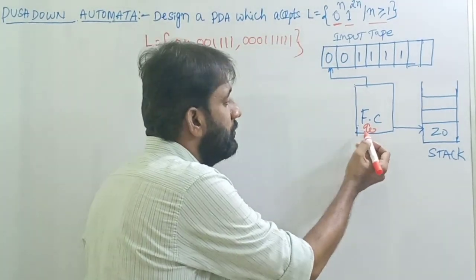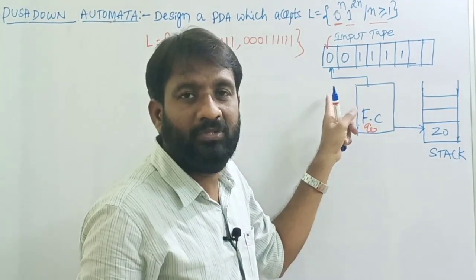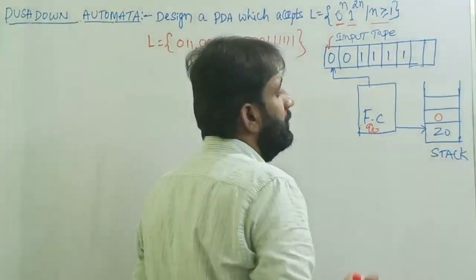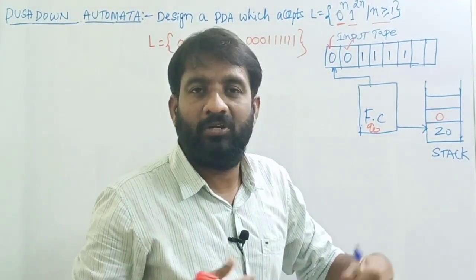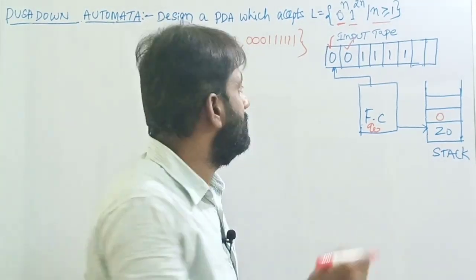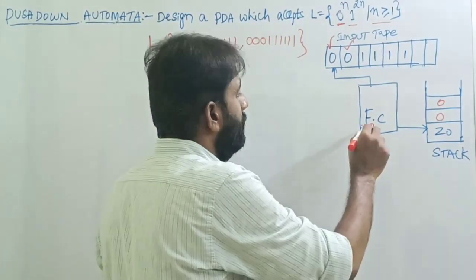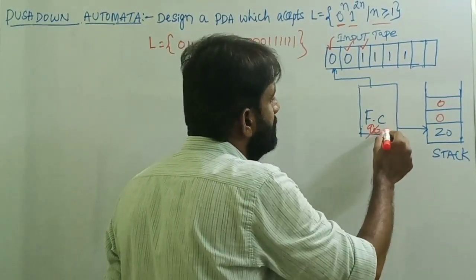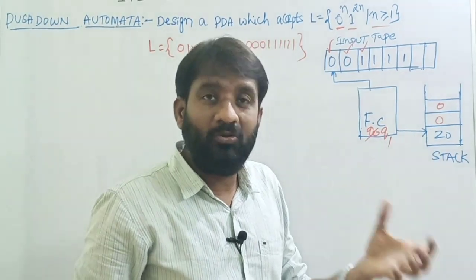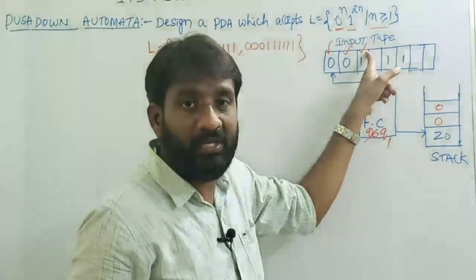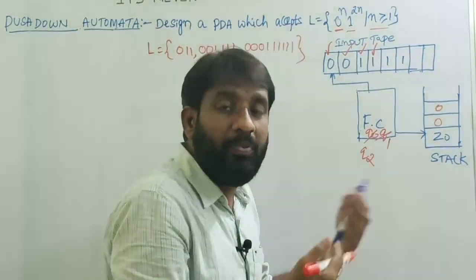Let me explain through a configuration. Initial state is q0. The first input symbol is zero — remain in state q0 and push onto the stack, so the top of the stack is zero. Next input symbol is zero — read zero and push onto the stack, remaining in the same state. Then the next input symbol is one — q0 reads one and simply changes to state q1, without any push or pop operation, because we've only read one of the two ones needed before popping.